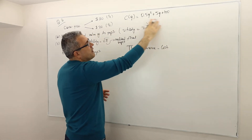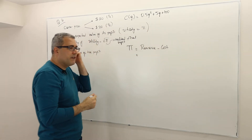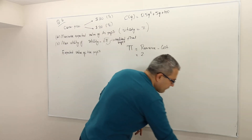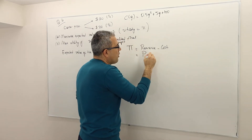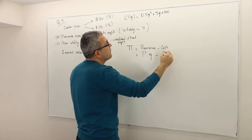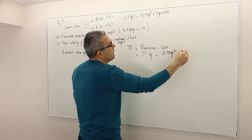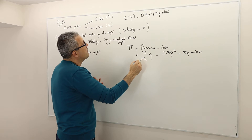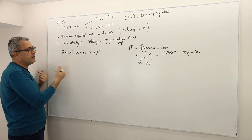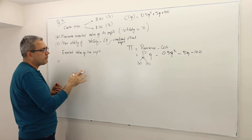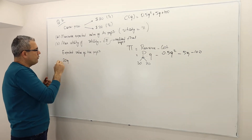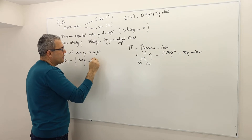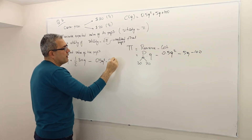The cost is given by the functional form. Revenue is price times quantity. Price here is either $30 or $20 — let me just leave it as P — times quantity, minus cost: 0.5Q squared minus 5Q minus 100. The only thing that varies is P. So the expected value of the profit equals one-half times 20Q plus one-half times 30Q, minus 0.5Q squared minus 5Q minus 100.